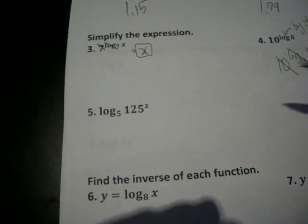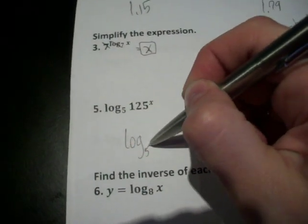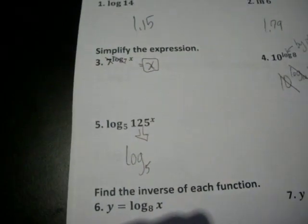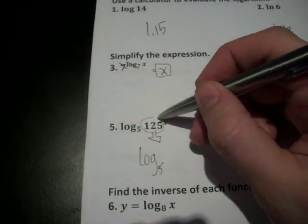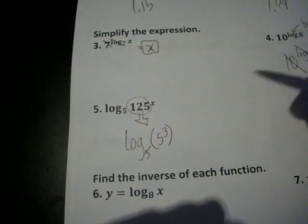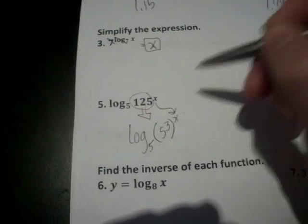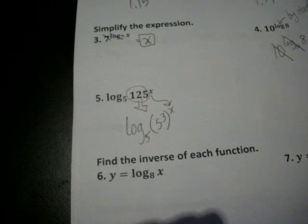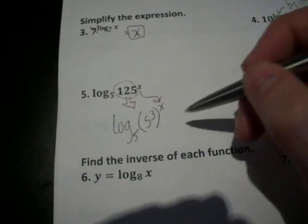Now, this one, the numbers are not the same, so what I have to do is rewrite the 125, and I'm going to write it as 5 to the 3rd, and then bring down that X.